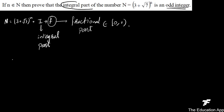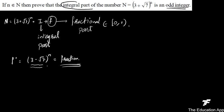अब मैंने f' = (3 − √7)^n लिखा। हम जानते हैं √9 = 3 होता है, तो √7 < 3। इसलिए (3 − √7) एक positive number है और इसकी power n लेने पर यह भी एक positive fraction होगा — 0 नहीं होगा, क्योंकि 3 ≠ √7। यानि f' भी open 0 से open 1 के बीच में है।